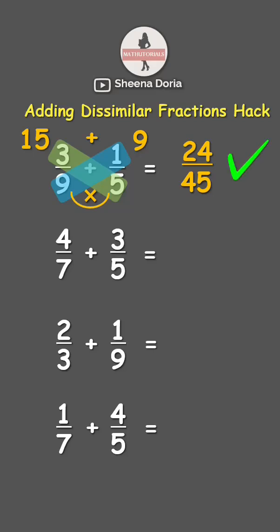Next, we have four sevenths plus three fifths. Cross multiply: four times five is twenty, and seven times three is twenty-one. Then add the numerators — twenty plus twenty-one is forty-one.